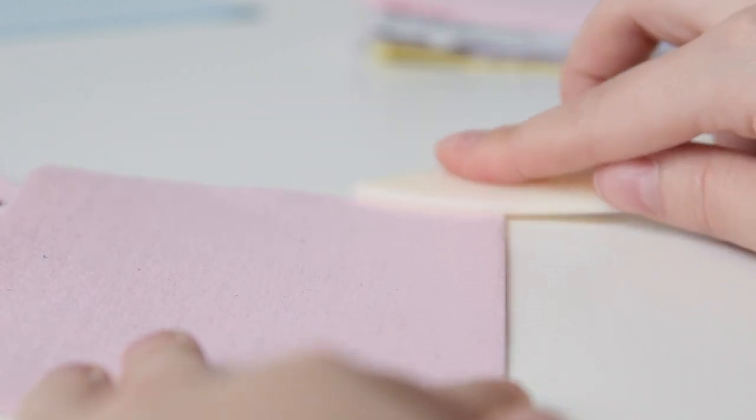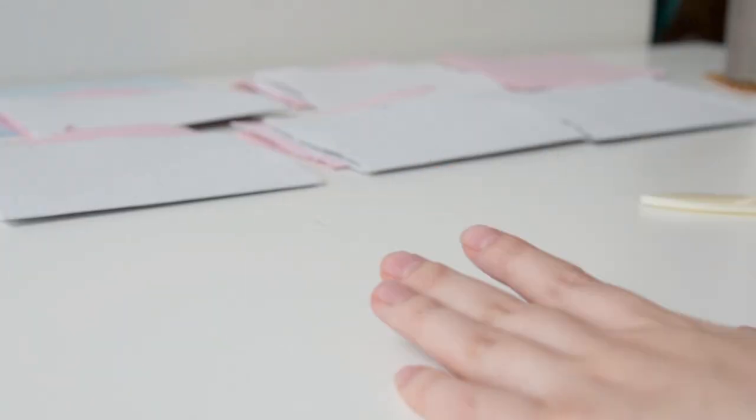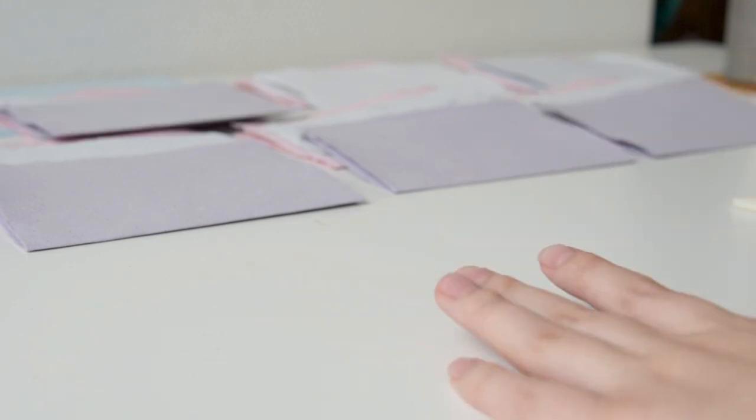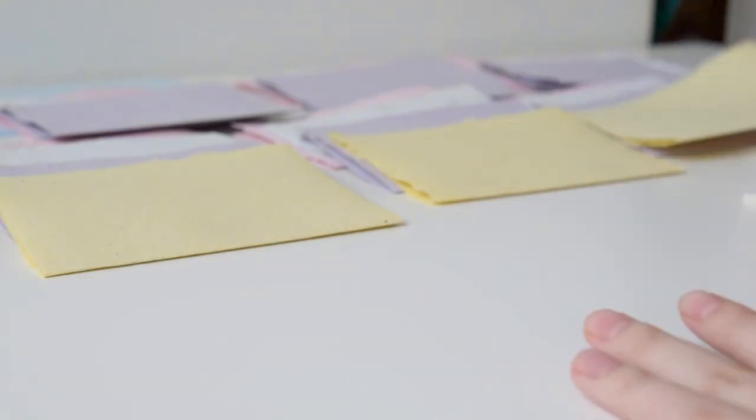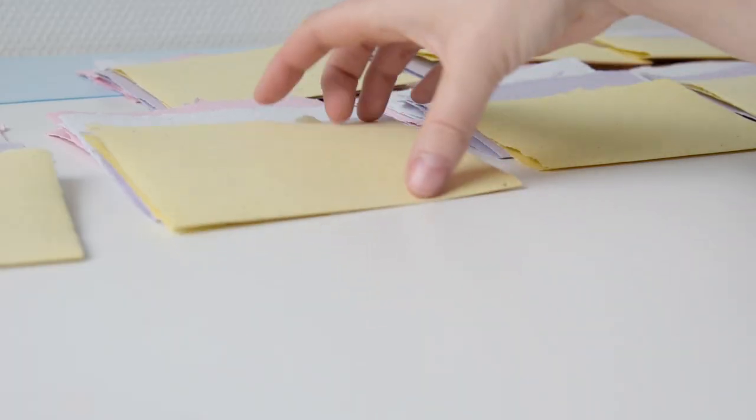I will be creating 7 signatures of 4 pages each, so each signature gets one color. So I already organized them like that. It's up to you how many signatures you want to make with how many pages. I would not recommend to use more than 5 pages per signature though, but how thick you make your journal is of course completely up to you.